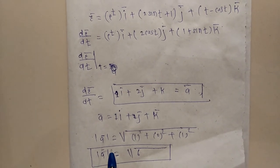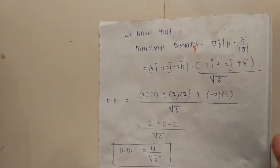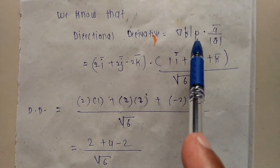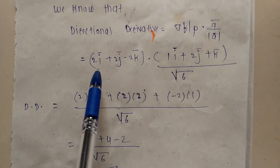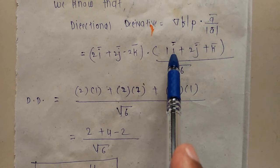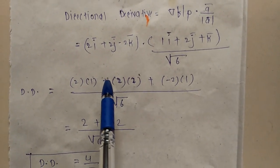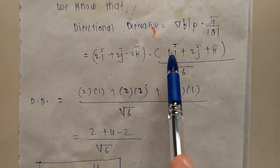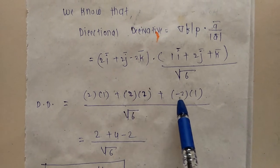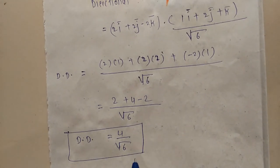Now we have all values to put into the directional derivative formula: DD = ∇f at P · ā / |ā|. So DD = (2i + 2j - 2k) · (i + 2j + k) / √6. Taking the dot product: (2×1) + (2×2) + (-2×1) = 2 + 4 - 2 = 4. Therefore, the directional derivative equals 4/√6.